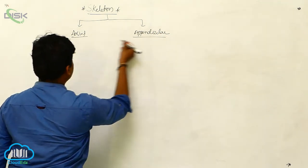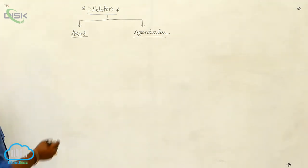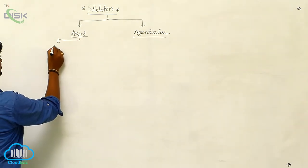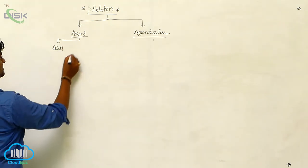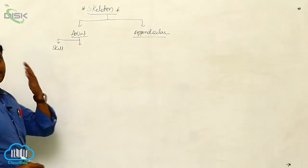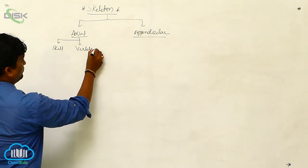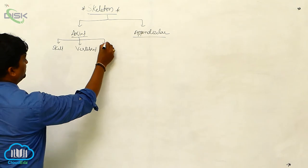The axial skeletal system consists of the head or skull, and second is the vertebral column.